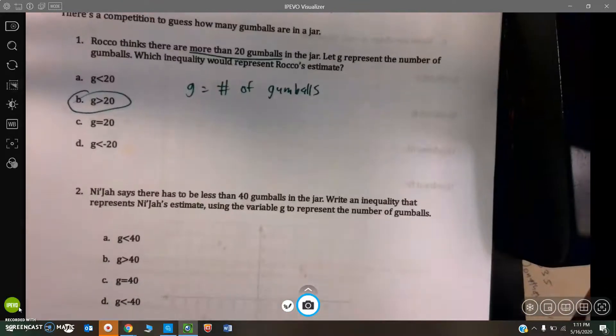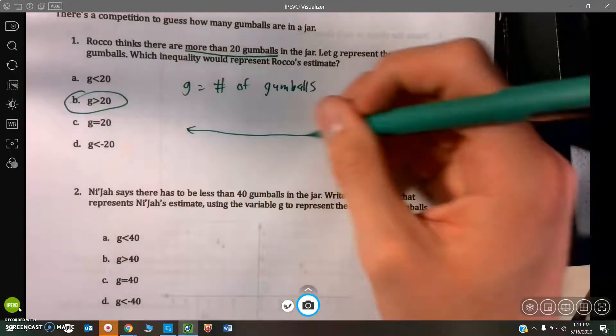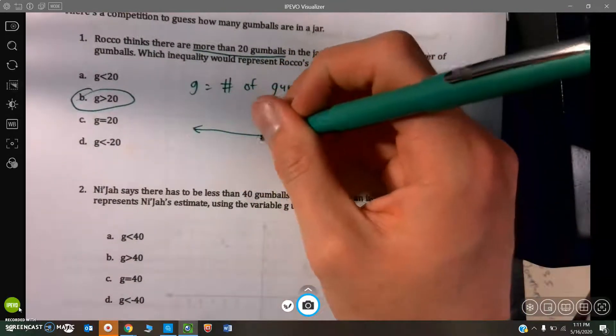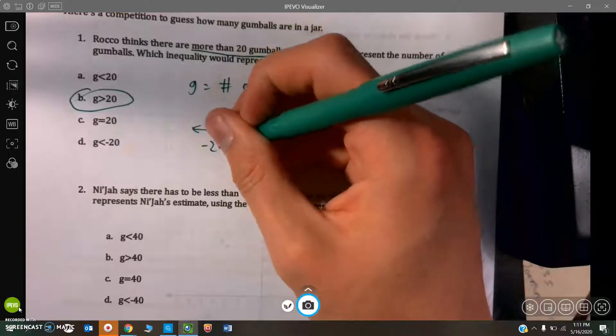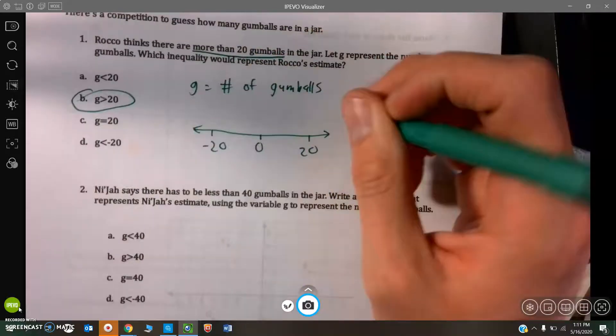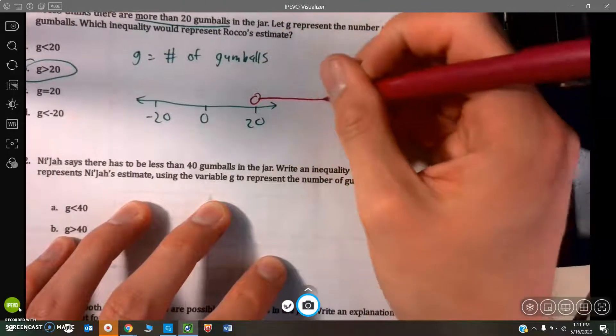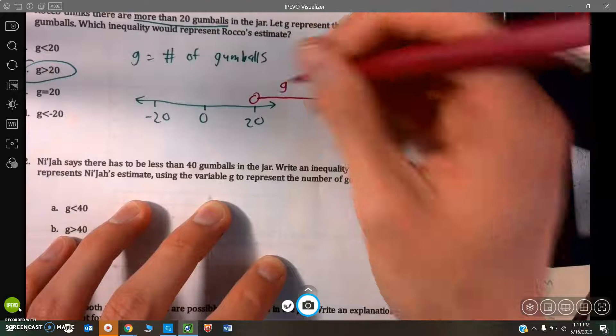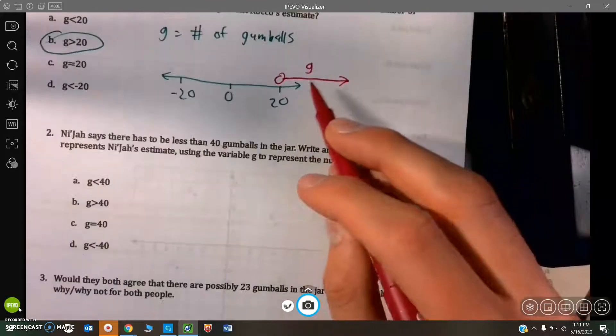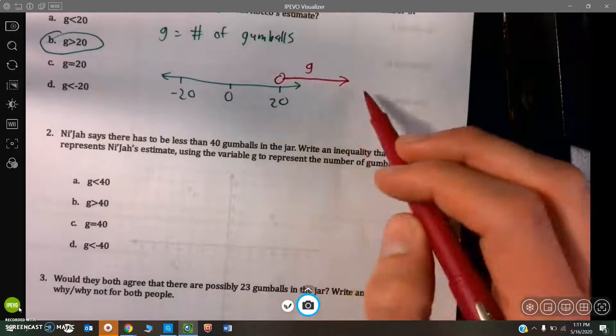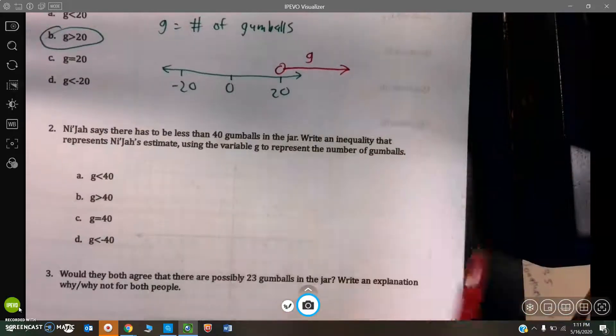If we wanted to put that on a number line, let's say here is 0, negative 20, and 20. He's saying that there needs to be more than 20 gumballs. This represents his estimate. He's saying it could be 21, 22, 23, 24, and just upwards into infinity.